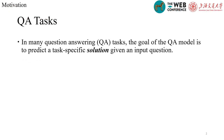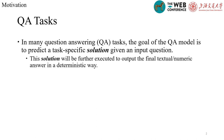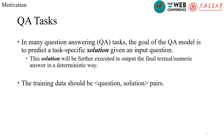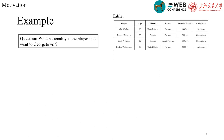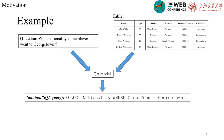In many question-answering tasks, the goal of the QA model is to predict a task-specific solution given an input question. This solution will be further executed to output the final textual or numerical answers in a deterministic way. The training data should be question-solution pairs generally. Here we have a natural language question and a table. We input them to a QA model and the output is a solution, which is a SQL query in this example. Then we need to execute the SQL query to get the final answer.